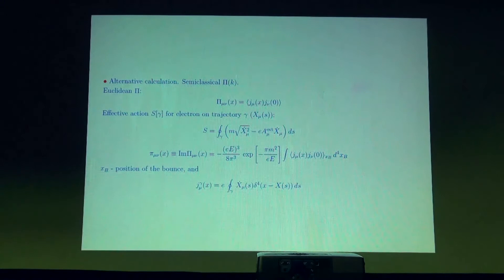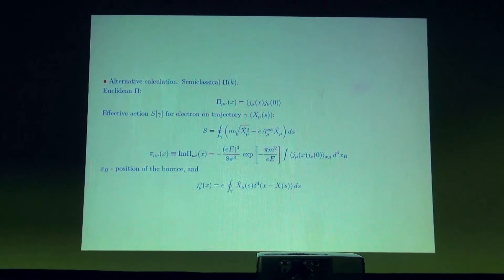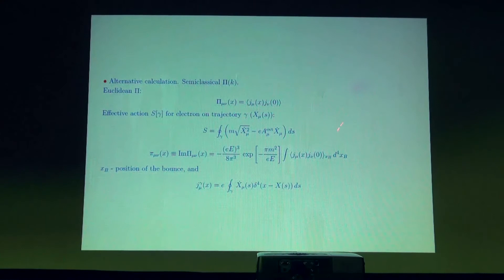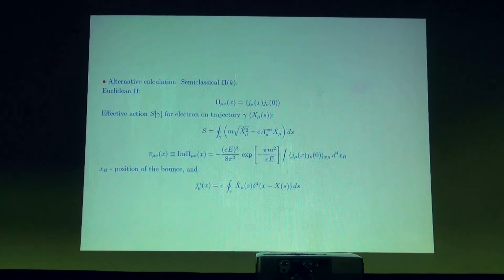We can also calculate directly the polarization operator as a correlator of currents on the instanton circle, without going through the thermal calculation. In the path integral, the integration over variables is simply the integration over the position of the circle. If you have two points where you measure the current, only those points which can be connected by the circle contribute to the correlator. So it is a simple geometric exercise — only points that can be connected by the circle give the correlator, yielding the same expression.